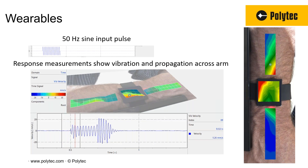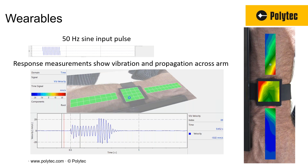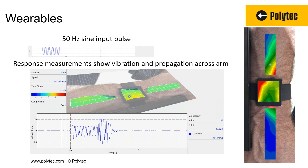Traditionally, measurements on skin are extremely challenging for an optical technique. In this particular case, the goal was to understand wave propagation as a response to haptic feedback. Haptic feedback is this new modality that most people have experienced — the little buzz from your watch or phone giving an alert. It's a vibration-based communication modality. The goal here was to understand wave propagation in the skin, and with the latest technology, these traditionally challenging measurements are no longer challenging.